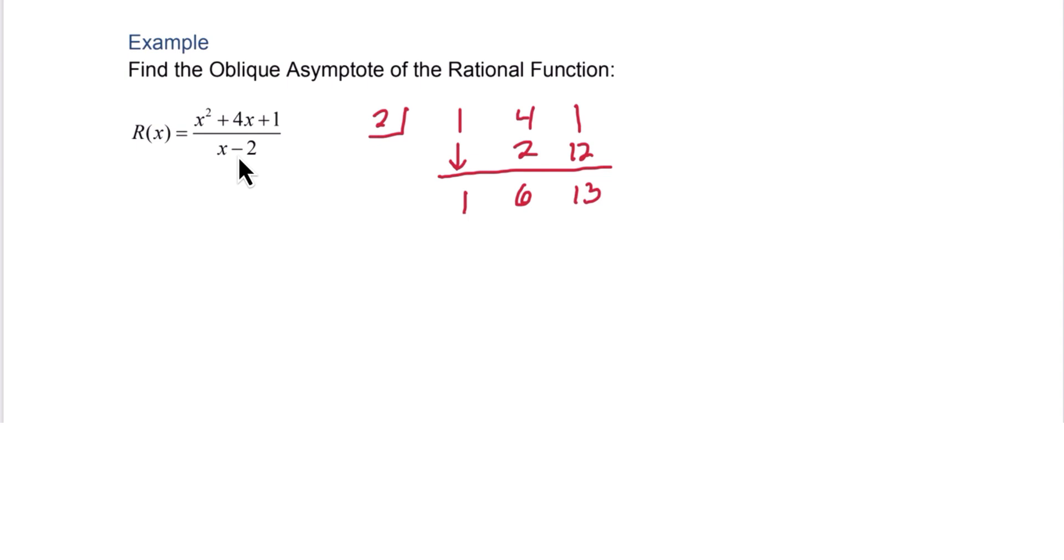Now remember that 13 is a remainder. Typically we want zero remainders but that's when we're finding zeros. We're not finding zeros here, we're finding the oblique asymptote. So really all we care about is these first two. We're gonna ignore the remainder, and if we translate that back into an expression that is 1x plus 6, and all we need to do is put y equals in front of that and we have the oblique asymptote.